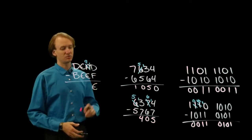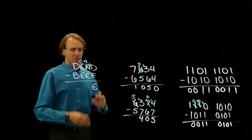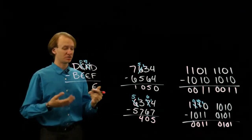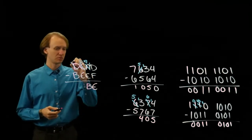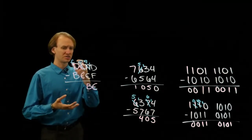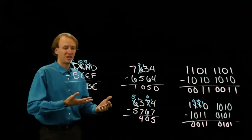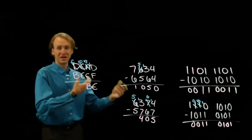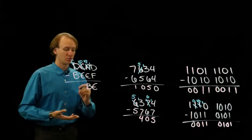9 is less than E, so I can't do that subtraction. I'll have to borrow something from this E — it will become a D. Now I have 19. So now I have 19 minus E: 10 minus E is 2, and 9 plus 2 is B. Again, D is less than E, so I can't do that. This one will be easier though — this one becomes a C. So D is 1 less than E: any time I try this 1D minus E subtraction, I'm going to get something that's 1 less than my 10. You can think of this like 16 minus 7 is 9, or 17 minus 8 gives you 9. In this case, 1 less than our 10 is F, so we will get F as a result.